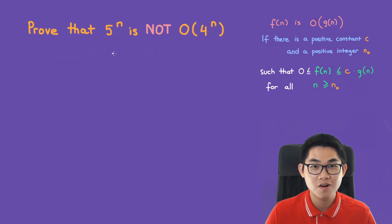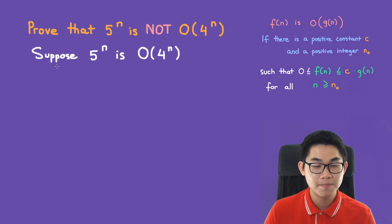Prove that 5 to the power of n is not O of 4 to the power of n. Suppose that 5 to the power of n is O of 4 to the power of n.